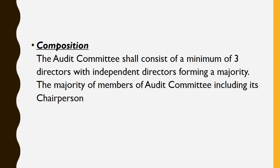Next is the composition or structure of an audit committee. The audit committee consists of a minimum of 3 directors, of which at least one should be an independent director forming a majority. The majority of members of the audit committee, including its chairman, must meet this requirement.